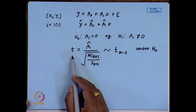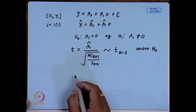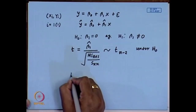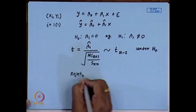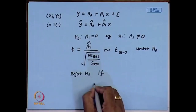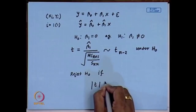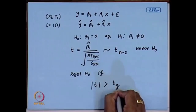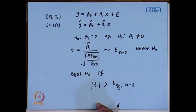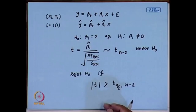We used this test statistic to test the hypothesis H₀, and we reject H₀ if the t value is greater than t_{α/2, n−2} at the level of significance α. Now another approach to solve this problem is called the ANOVA technique, that is analysis of variance.